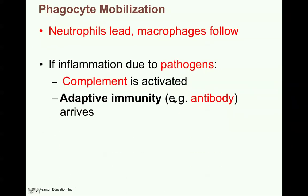Phagocyte mobilization — the neutrophils lead because they're so plentiful and then the macrophages will follow. Both types of cells engage in phagocytosis. If the inflammation is due to pathogens, a chemical called complement will be activated. And then also the body will alert the adaptive immunity segment — the B cells — which will form antibodies. This part of the adaptive immune system will be activated by other cells on the scene such as neutrophils and macrophages.